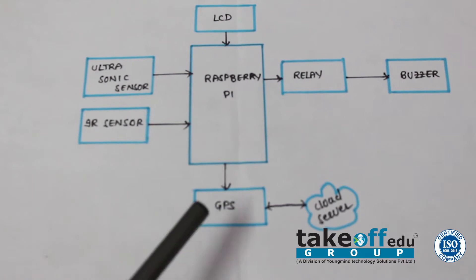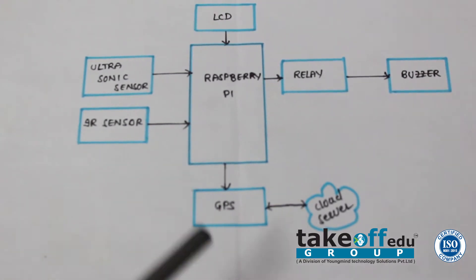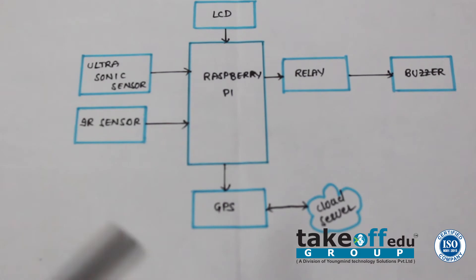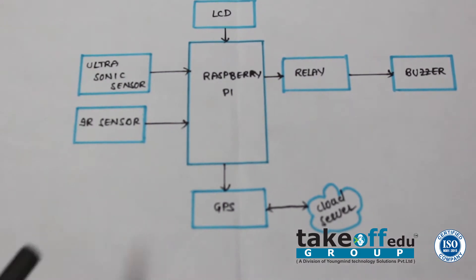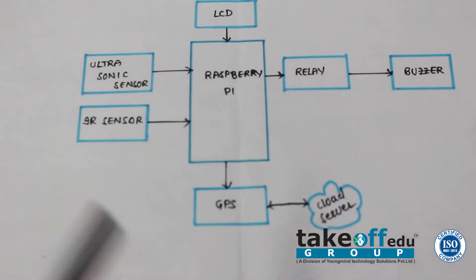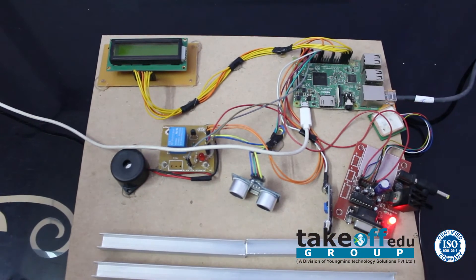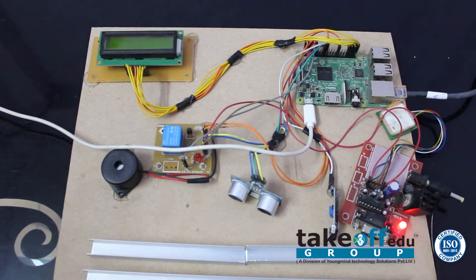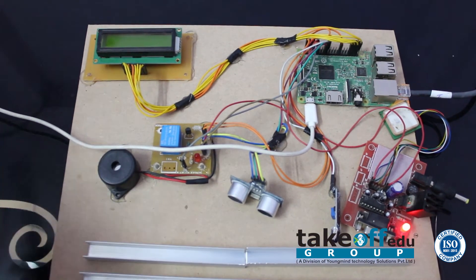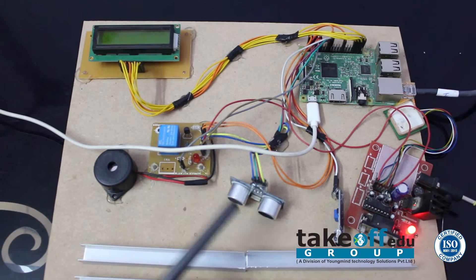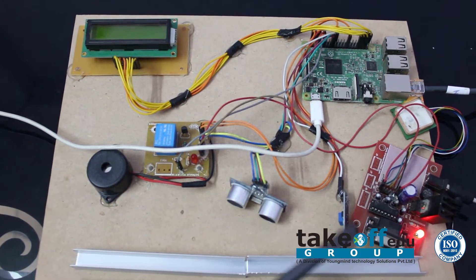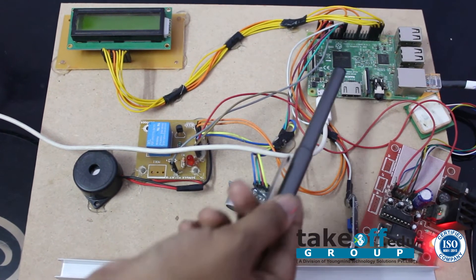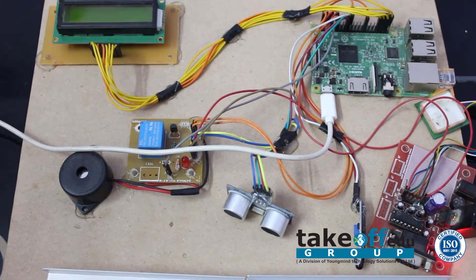We are using GPS to track the exact location of the fault, and a cloud server is used to update the data. So the components are: LCD, relay, buzzer, ultrasonic sensor, IR sensor, GPS module, and Raspberry Pi.